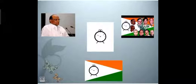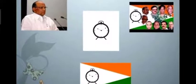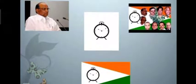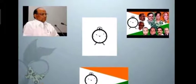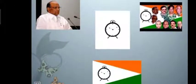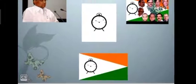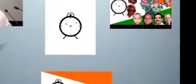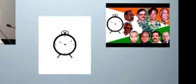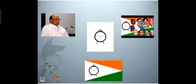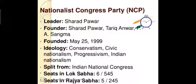Here is one more — the sixth party. On the left-hand side you can see a photo of Sharad Pawar, in between the symbol of that party — a watch — and on the right-hand side many more leaders of this party. This party is known as the Nationalist Congress Party.